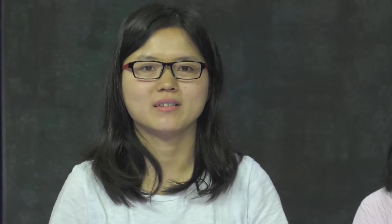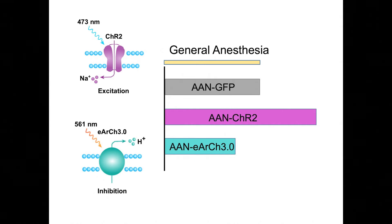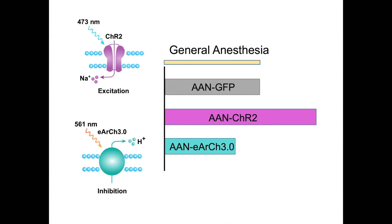Furthermore, we also investigated the functional role of AANs during general anesthesia. By selectively expressing either channelrhodopsin to activate these cells, or a light-gated proton pump eNpHR3.0 to silence them, we bidirectionally manipulated AAN activity during anesthesia. In control animals expressing only GFP, we applied general anesthetics and measured the duration animals stayed unconscious. We discovered that animals stayed in an unconscious state longer after we briefly activated AANs. In contrast, animals emerged from anesthesia quicker when we inhibited those cells.